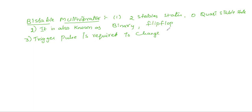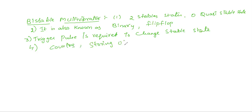To change the state of the transistor from one state to another state, we have to apply a trigger pulse. The main application of this bistable multivibrator is that it is used in digital operations like counting and for storing of data.